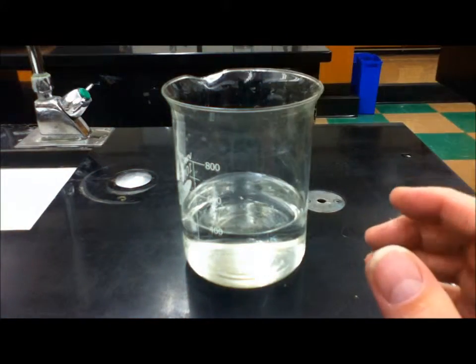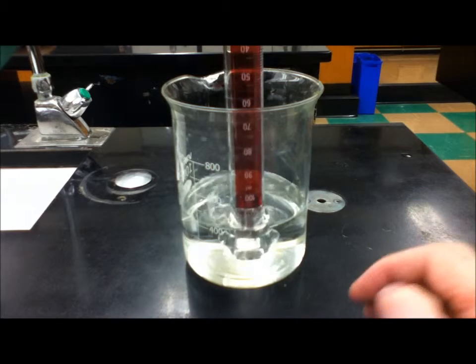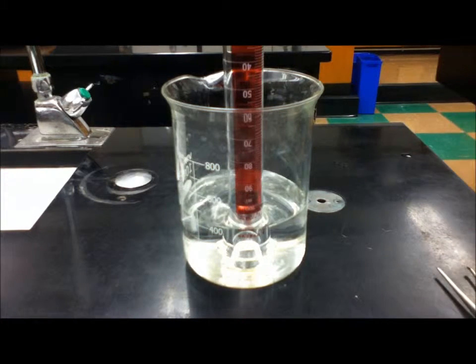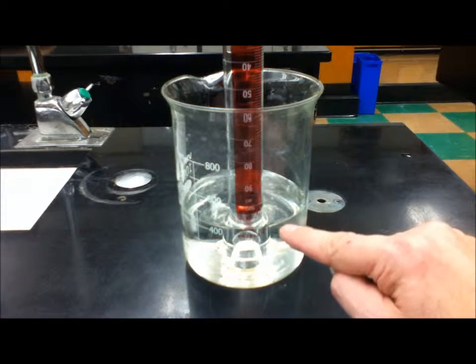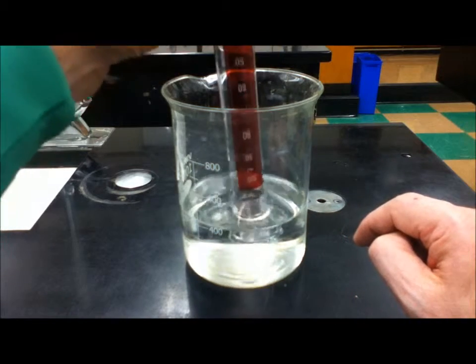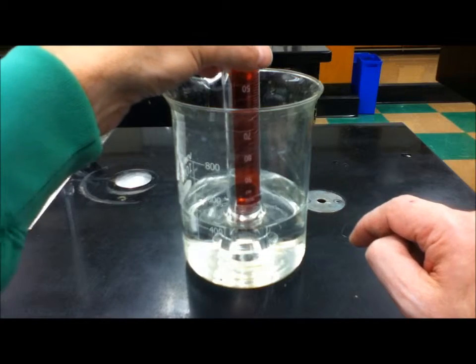Now what we're going to do is immerse the graduated cylinder into the flask so that the water level in the cylinder is at a hundred mils, and that's pretty much where it is.